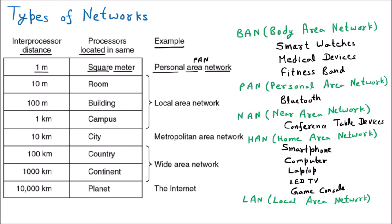After LAN, we have the next category called CAN — Campus Area Network. The Campus Area Network is actually the extension of the LAN. Just like if there is a college with one building that is LAN, but if a college has four or five buildings — like a university such as Delhi University — many buildings are connected with each other in some kind of network. That complete campus is called CAN. The example of CAN is a university.